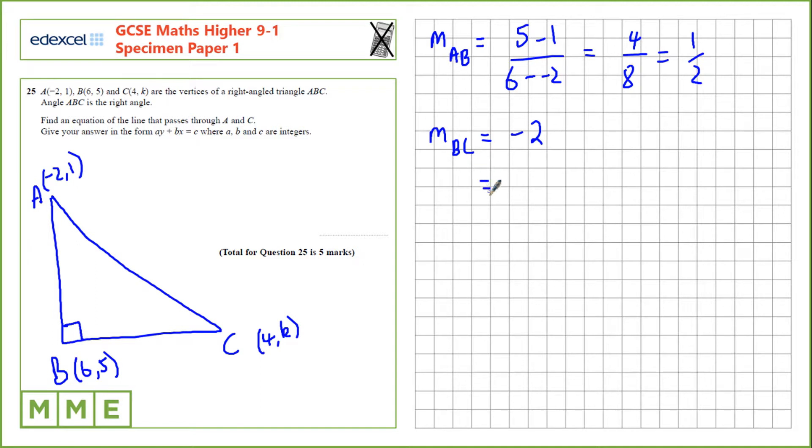Let's calculate this using K. So, the change in the Y value from B to C is 5 minus K, and the change in the X value is 6 minus 4. So, we have 5 minus K over 2, and we know that's equal to the gradient here, minus 2. Now, we can use this to work out the value of K. 5 minus K is minus 4, minus K equals minus 4 minus 5, which is minus 9, so the value of K is 9.